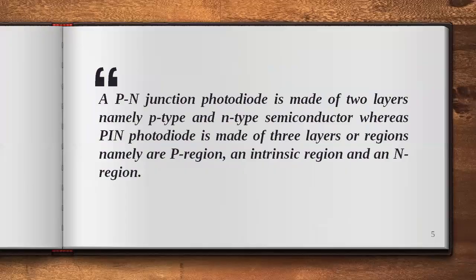A PN junction photodiode is made of two layers — one is P and another is N type semiconductor. Whereas PIN, the name itself indicates it has three regions in the construction: one is the P region, the second is the intrinsic region, and the third is the N region.